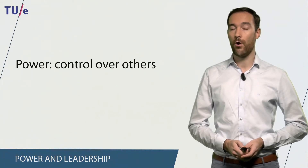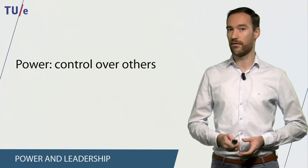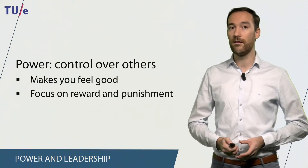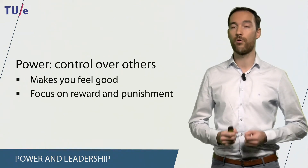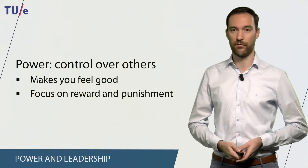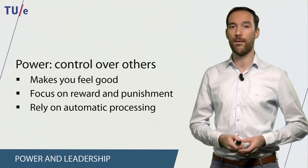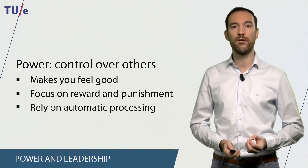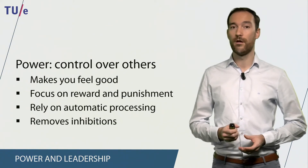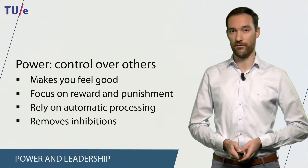Power is having control over other people's behavior or the decisions that they make, and it has a number of effects. First, it makes us feel good, which could lead to focusing more on rewards and punishments rather than building relationships with team members. Power could also lead to relying more on automatic processing rather than deliberately thinking about decisions. Finally, having power removes inhibitions, and this could lead to making very bad decisions.